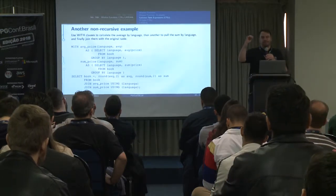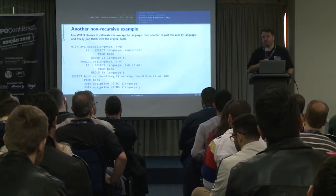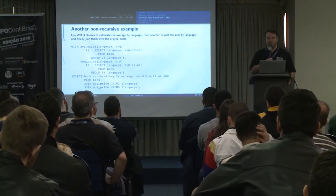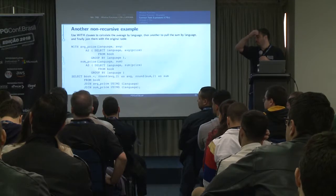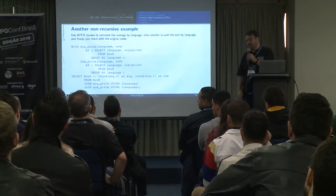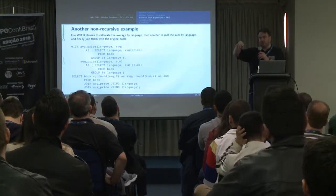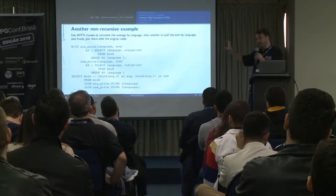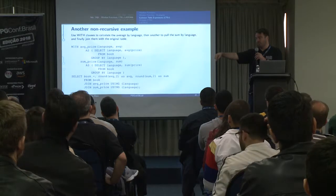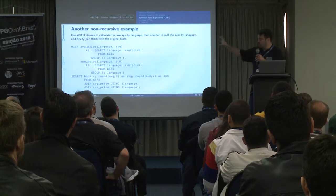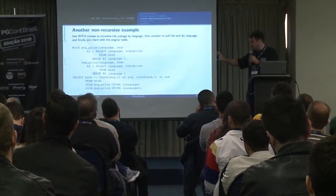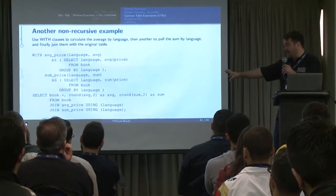CTEs will spill to disk if they need to, since you could have an arbitrarily large result set. The big difference between a CTE and a subquery in a FROM clause is that CTEs are independently optimized — the optimizer only looks at each CTE by itself, whereas with a FROM clause subquery the optimizer might push down conditionals into it. So for the CTE, we optimize each one separately, then optimize the main part of the query by itself.